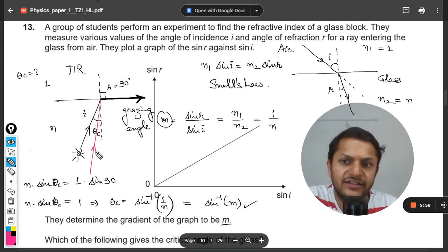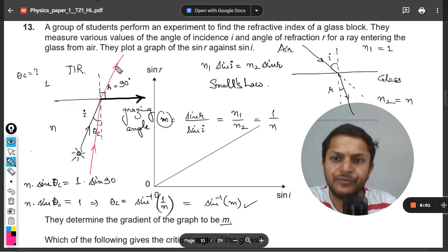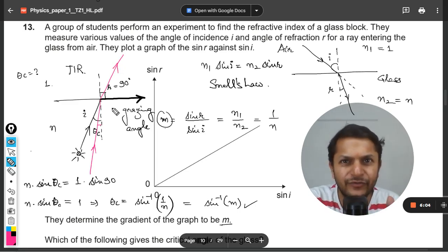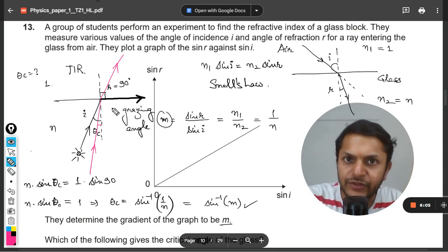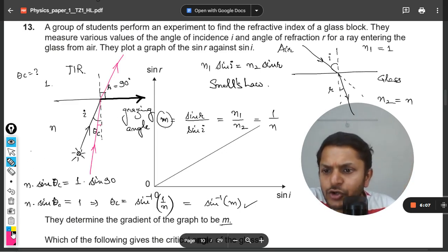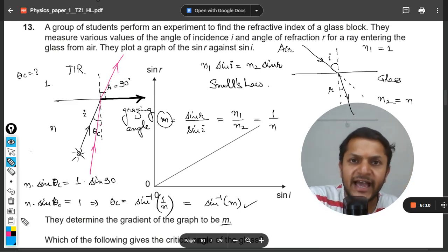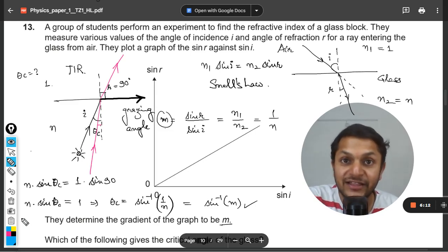But definitely there will be bending of the light, but light will come out of the medium. But if I talk about another case in which the angle of incidence is greater than the theta critical...